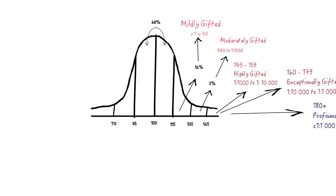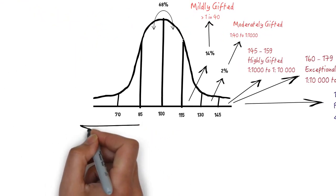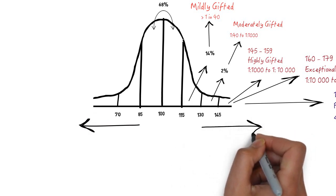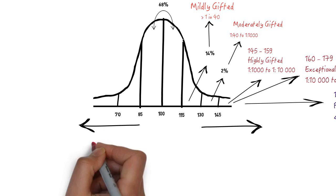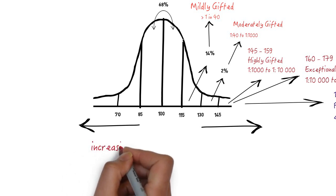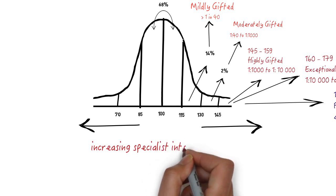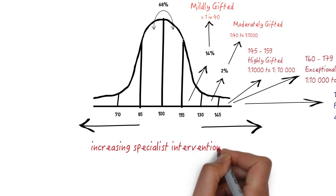Below an IQ of 85, children need specialist intervention in school. Or in some cases, access to a special school in order to achieve. It sounds counterintuitive, but the further above an IQ of 130, the greater the need for specialist intervention to ensure gifted children receive an appropriate education.